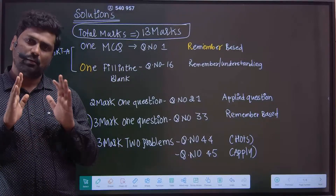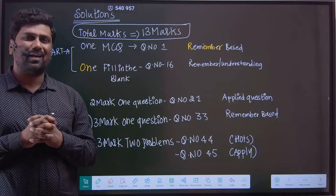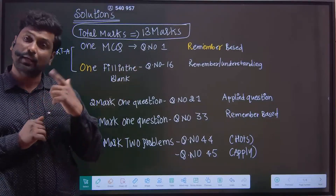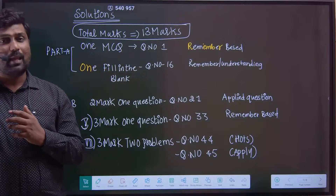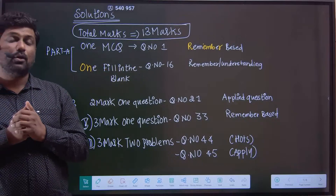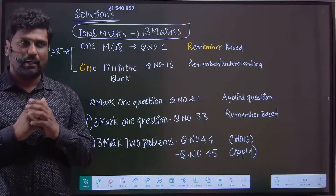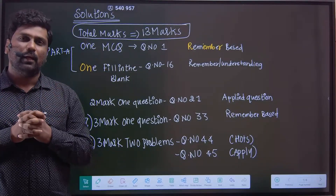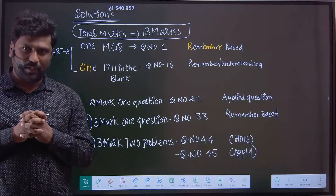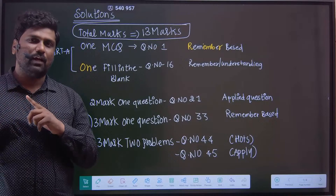These concentration expression topics appear in question number 16 and are easily understood as remember-based questions. From the last part of the chapter, abnormality in molar mass — topics like the van't Hoff i-value being less than 1 or greater than 1 — are also covered as MCQ topics.